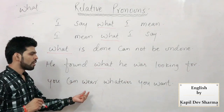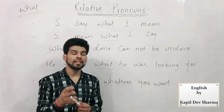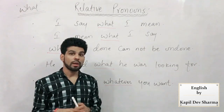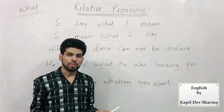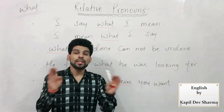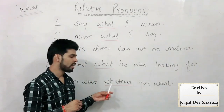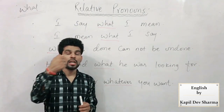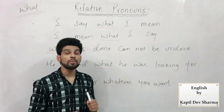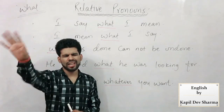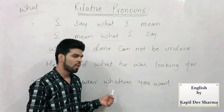'You can wear whatever you want' — 'whatever' compound relative pronoun hai. Inhein compound relative pronoun kaha jaata hai — compound matlab jod kar banaaya hua, jaise chemistry mein compounds banaate hain. Compound words humne noun mein padhe the — son-in-law, daughter-in-law, commander-in-chief etc. Compound matlab 'whatever' = what + ever — jo kuch bhi. 'What' ek ko dikhata hai, 'whatever' choice ke case mein zyada ko dikha sakta hai — jo acha lage pehen lo. Jab antecedent mention nahi ho, isliye 'what' ka istamal karo.